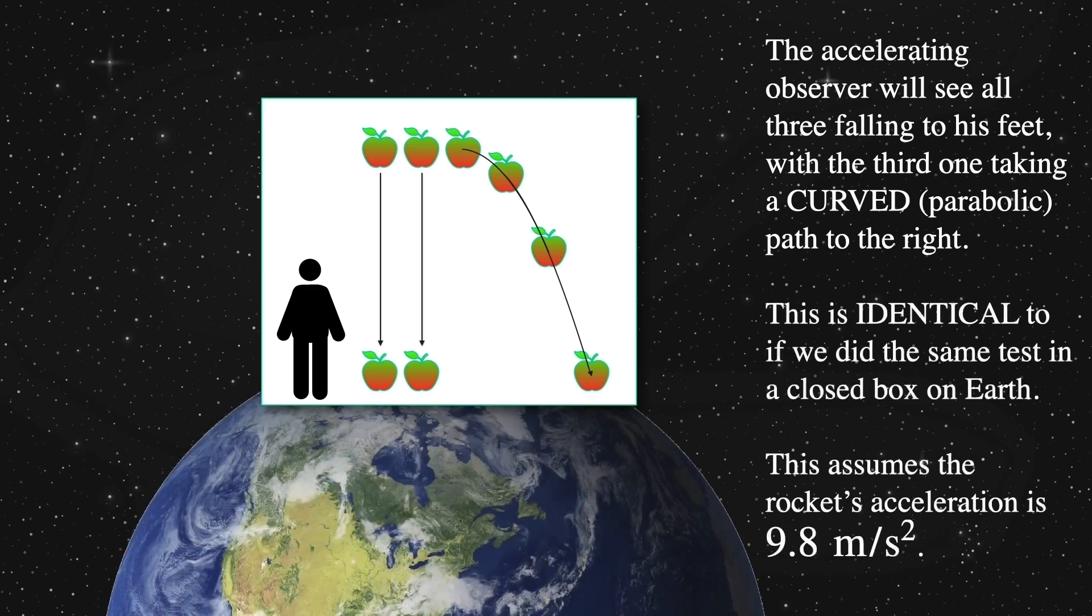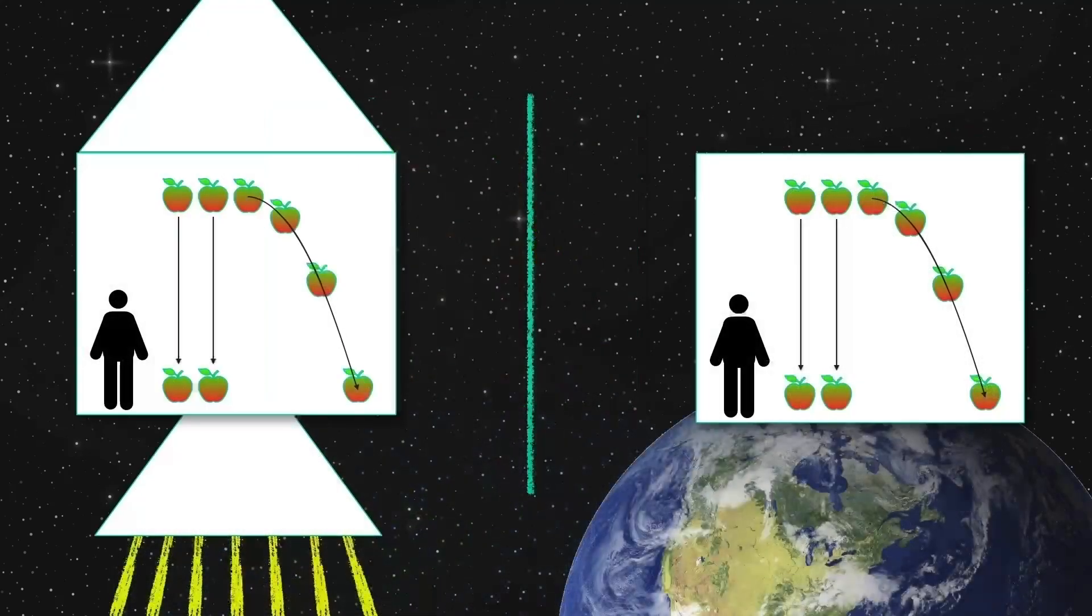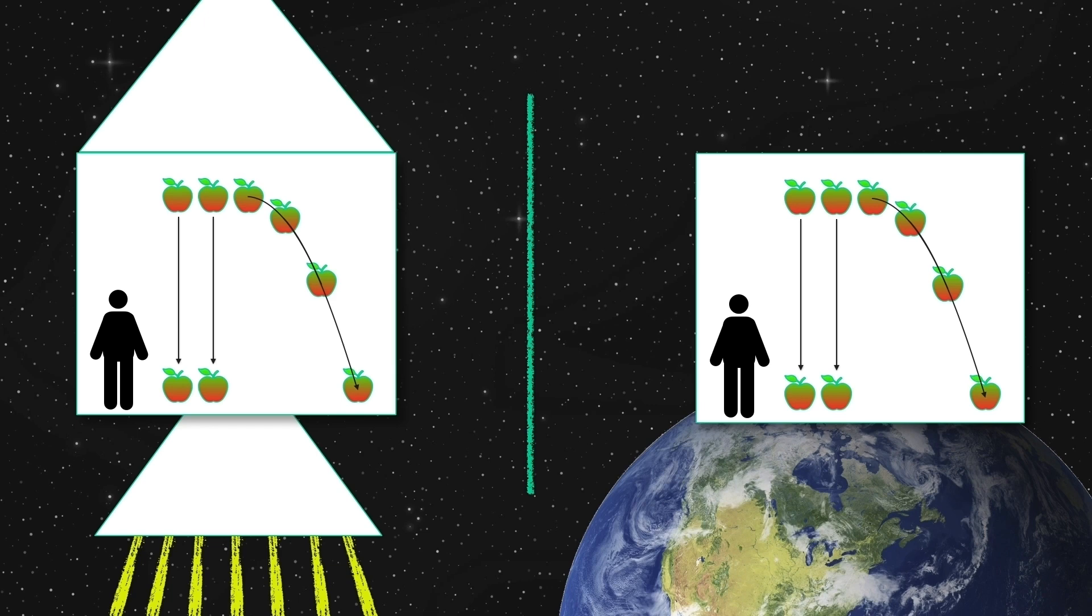As per the weak equivalence principle, Elton couldn't tell if he was on Earth or in a rocket. And that's the essence of this. This comparison shows that there is a complete equivalence of the two non-inertial, non-free-falling accelerated reference frames.